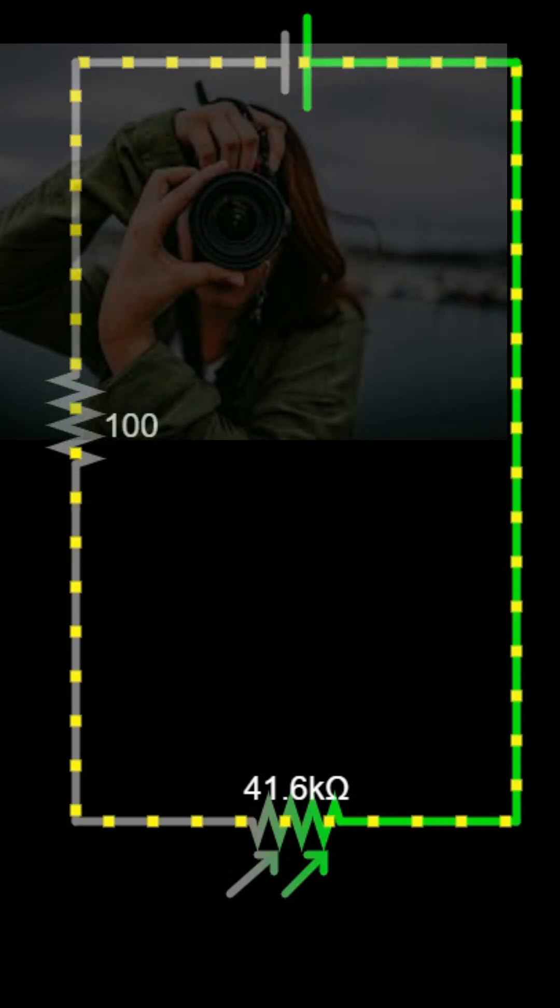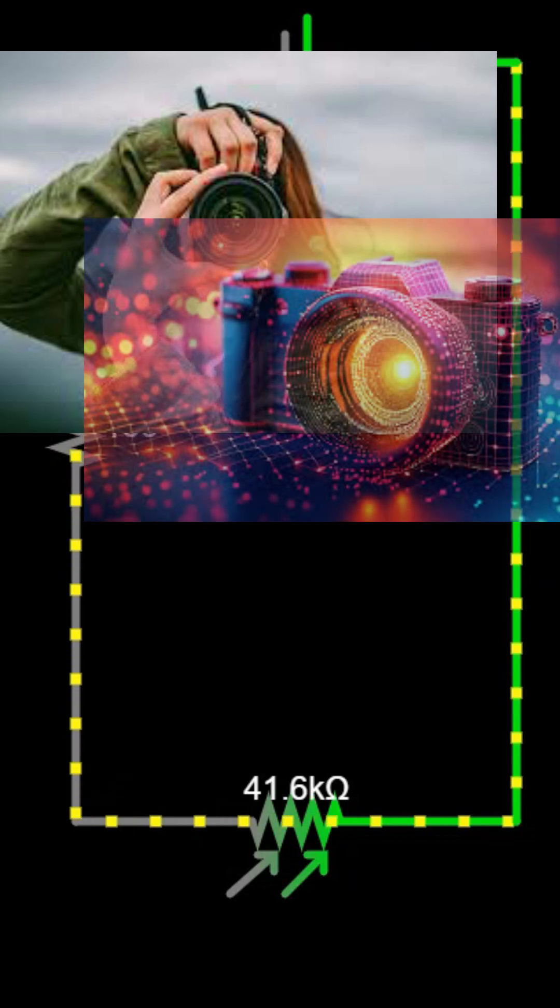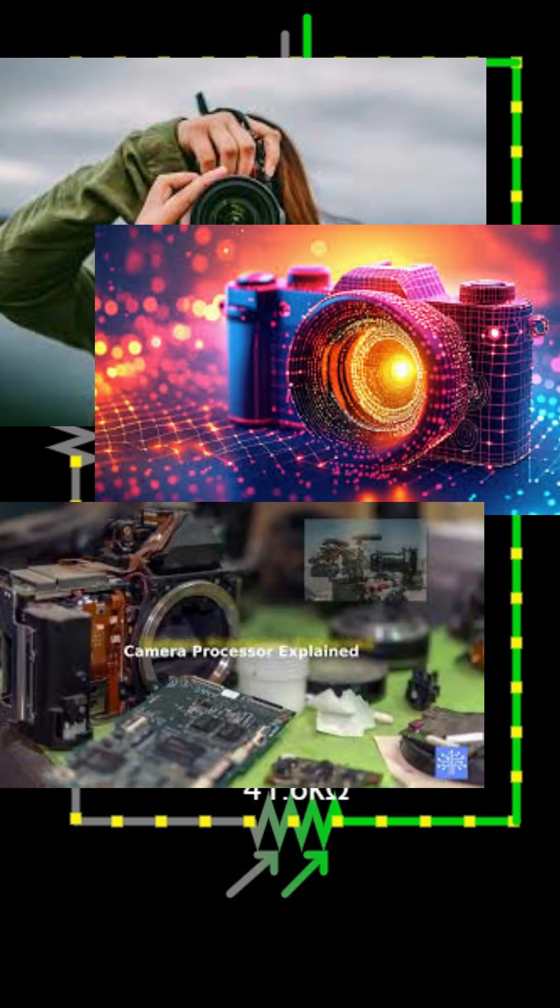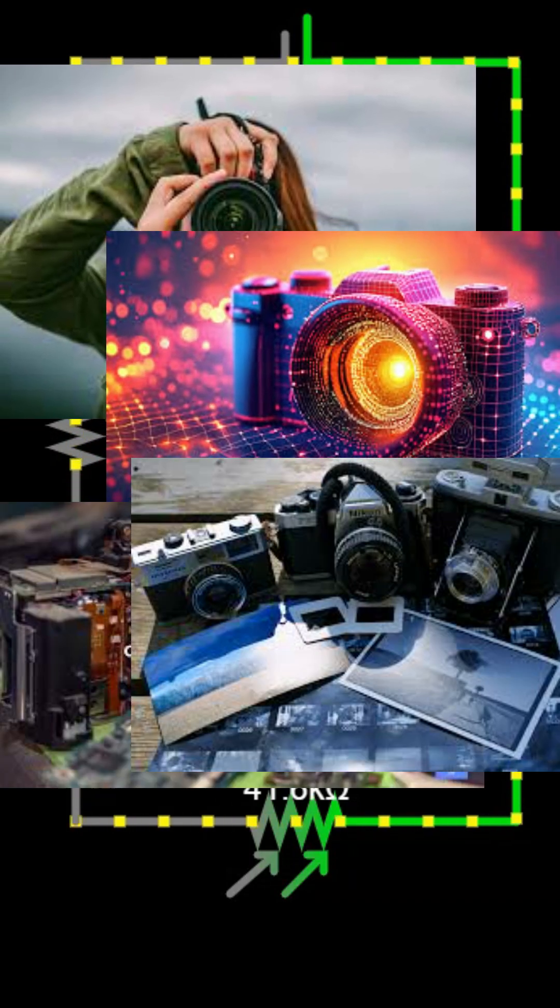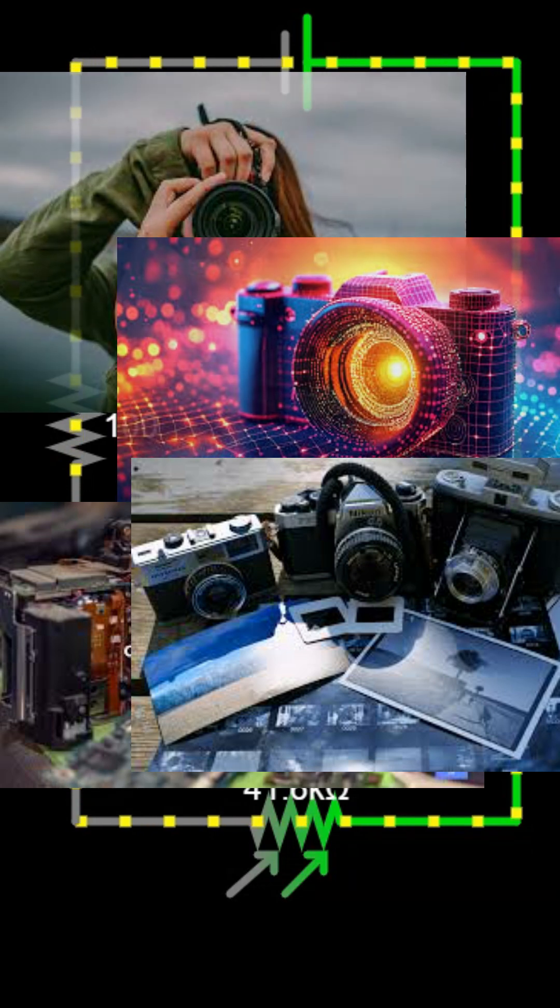Every time you take a photo, the sensor captures light, the processor builds the image, and the camera turns it into a final digital picture, all in a fraction of a second.